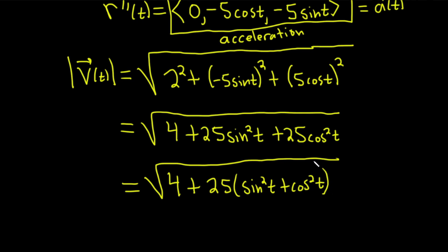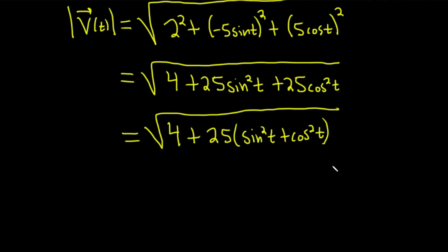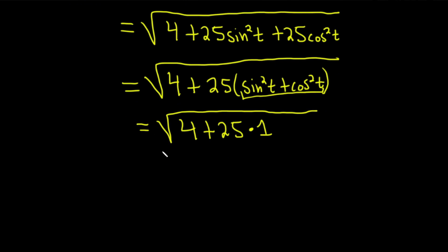Maybe you see where this is going. This works out really nice. This is 4 plus 25 times, and this is the identity, that is equal to 1. Right? Sin²(t) + cos²(t) is equal to 1. So we end up with just 4 plus 25, which is the square root of 29. That's what we get there. So that would be the speed.